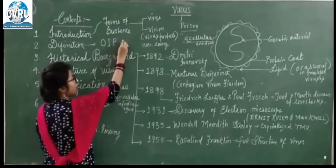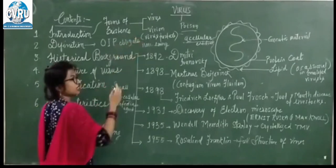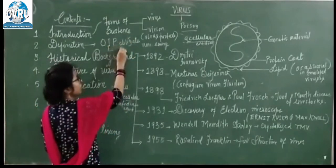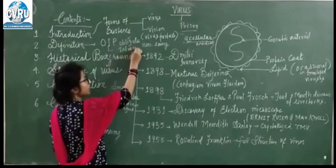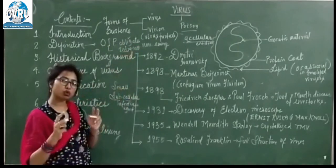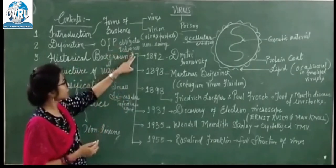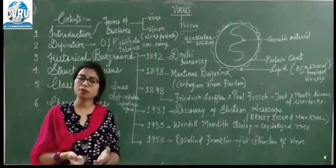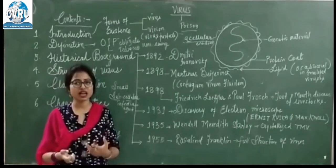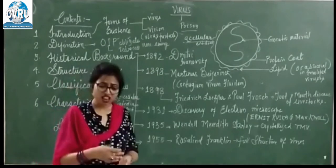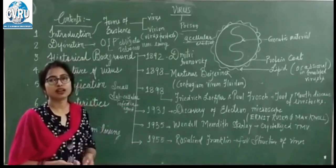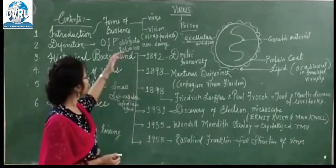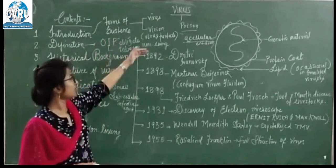OIP मतलब: O stands for Obligate — strict, जो किसी चीज़ को लेकर एक निश्चितता है. I stands for Intracellular — intra मतलब under, cellular मतलब कोशिका, so cell के under present होगा. P stands for Parasite — जो अपने आहार और replication के लिए दूसरे living organisms पे depend करते हैं. So viruses are called obligate intracellular parasites.